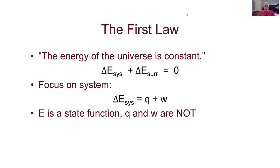Because energy of the universe is constant, if I take the change in energy for the system, which is labeled here as delta E for the system, and add that with delta E for the surroundings, they have to sum to zero. Basically, if the system is gaining energy, it has to come from the surroundings. If the system is giving off energy, it has to go to the surroundings.